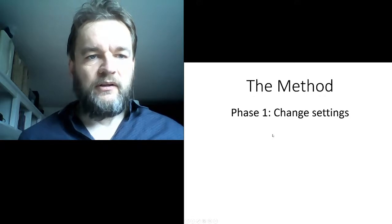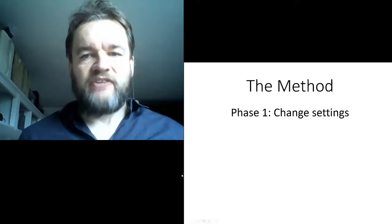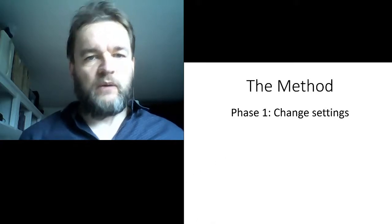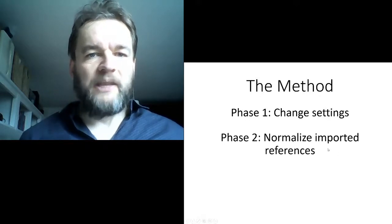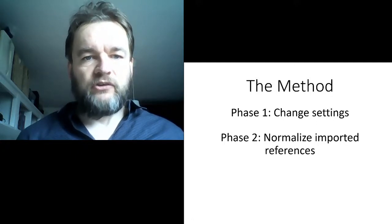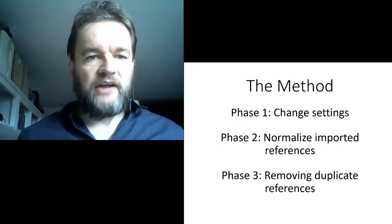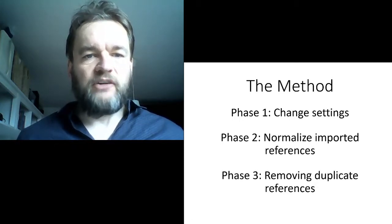The method consists of three phases. The first phase is changing the settings of your EndNote installation to ease the process. This has to be done only once when you start using the method. After that, we need to normalize the imported references for your review to assure page numbers and journal titles are similar across databases. The third and final phase is the actual deduplication process in which you remove duplicate references. These three phases will be discussed in three separate videos.